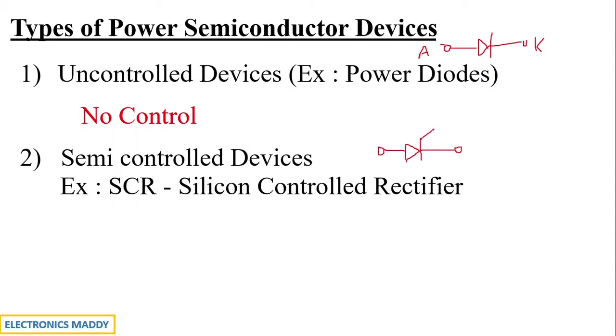SCR basically has three terminals: you have anode, you have cathode and then you have gate. And this gate terminal is responsible for controlling this device. When you provide a gate pulse to this device, it is turned on and that is why you have control to turn this on.